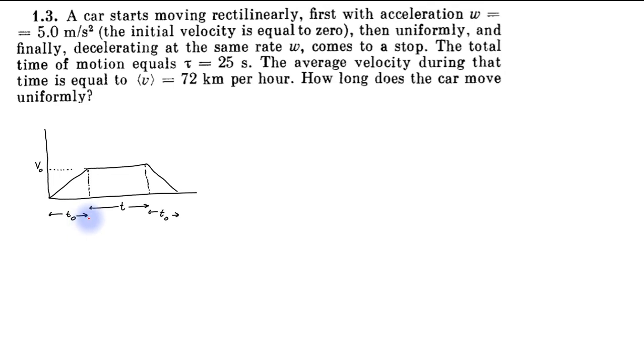We have to find this time where the particle has moved with constant velocity. Because the rate of acceleration is 5 meters per second squared and initial velocity is zero, the peak velocity v₀ must be given by ωt₀, which is equal to 5t₀, using the formula v equals u plus at.